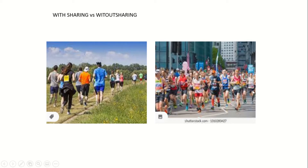Look at this diagram. In the first diagram you can see there is one track and in that track few people are running. In the opposite diagram, you can see the same track but multiple people are running. The difference is only fewer people are there — in the same way we have with sharing and without sharing. The first image represents with sharing, with only limited people running.